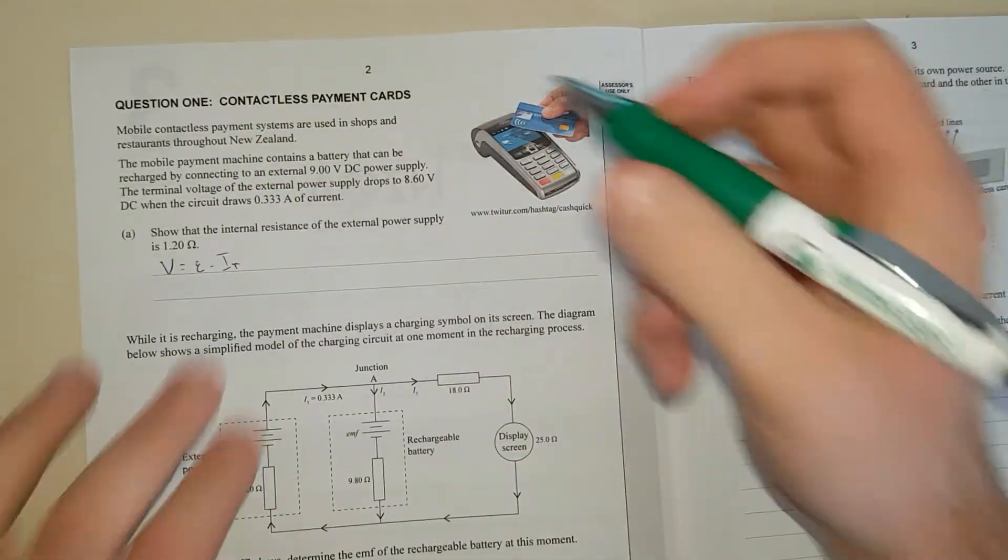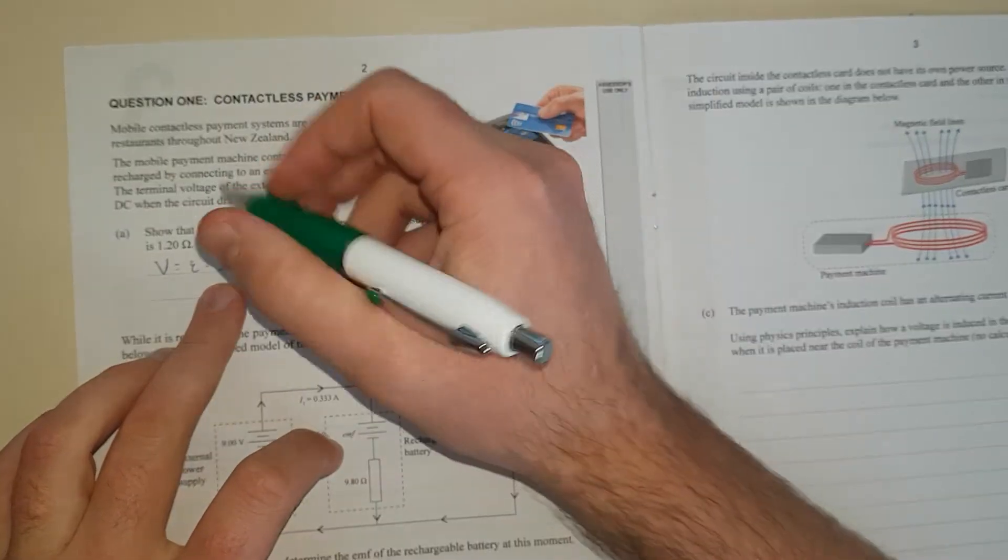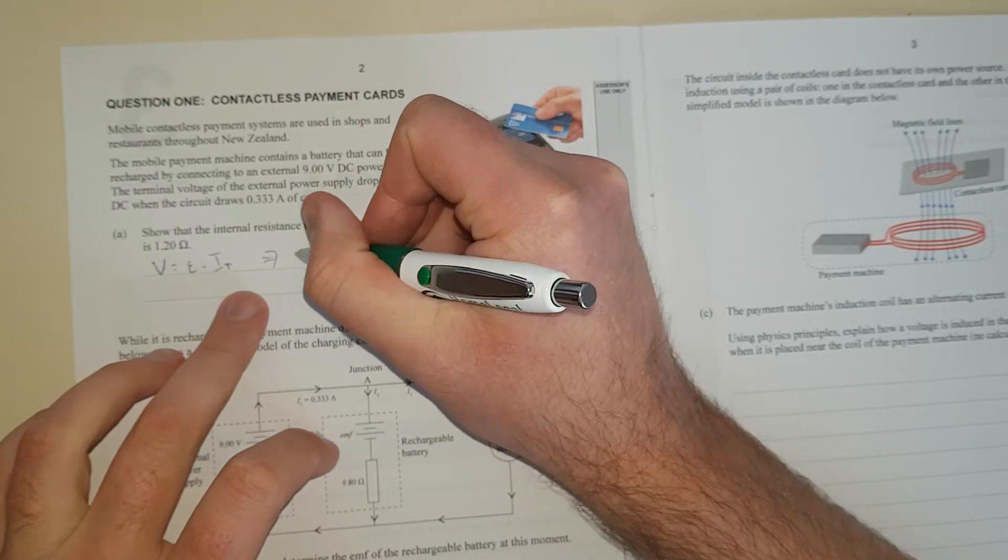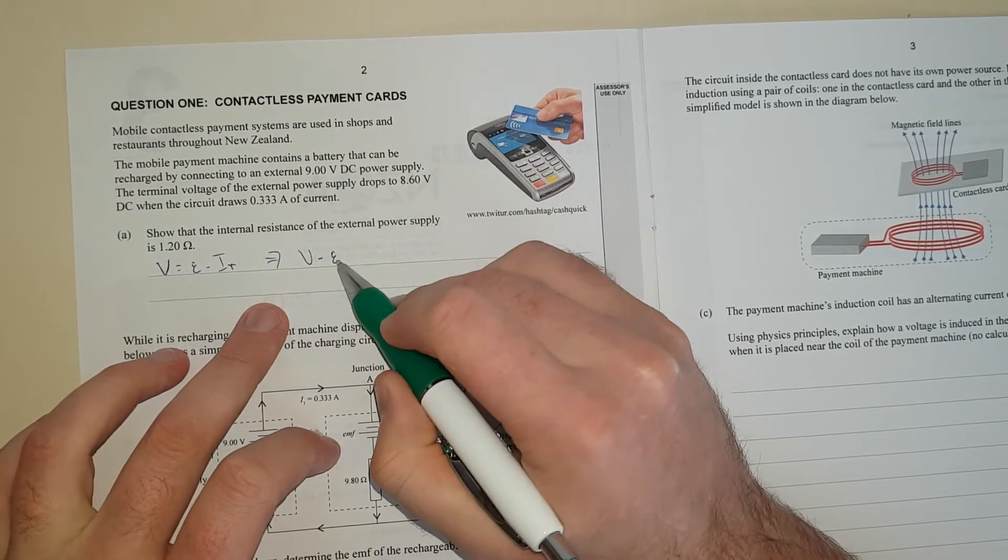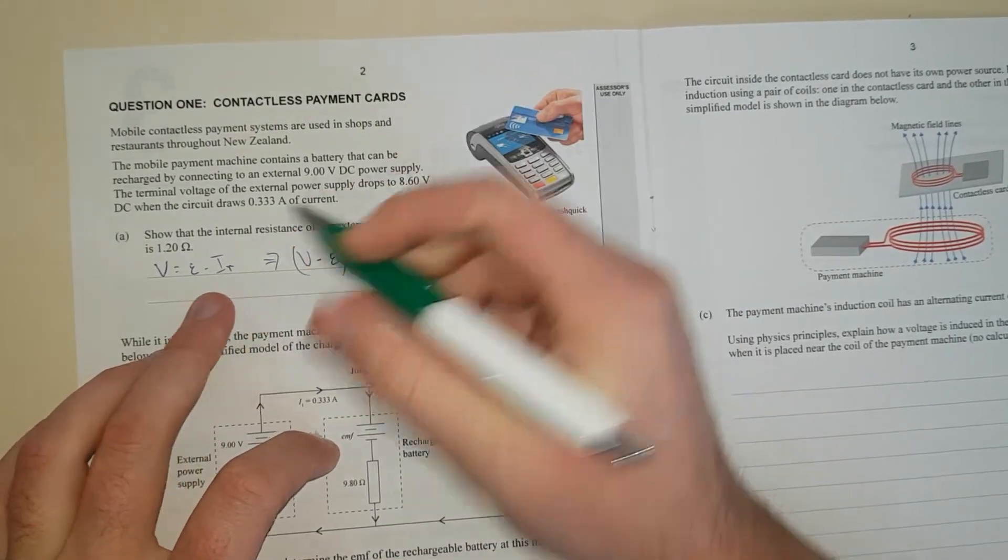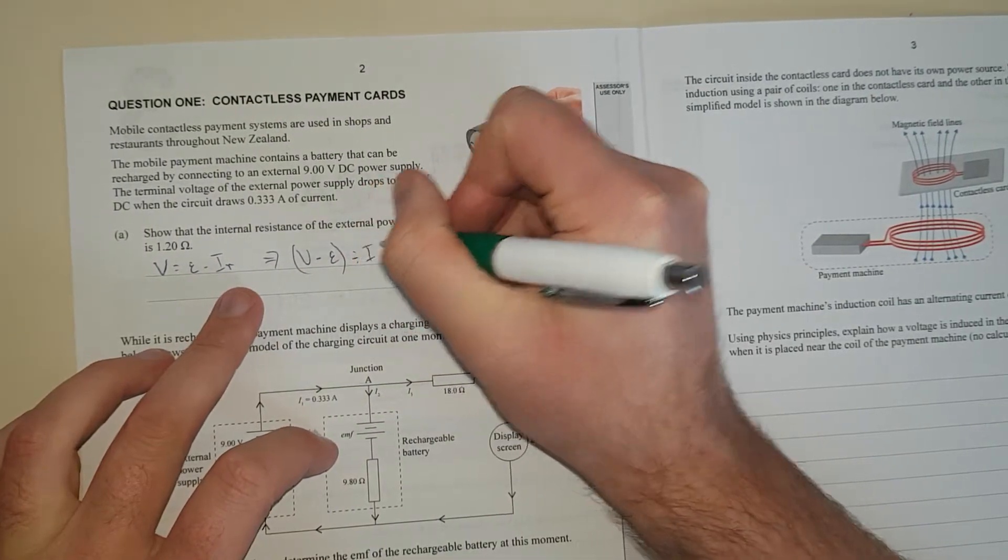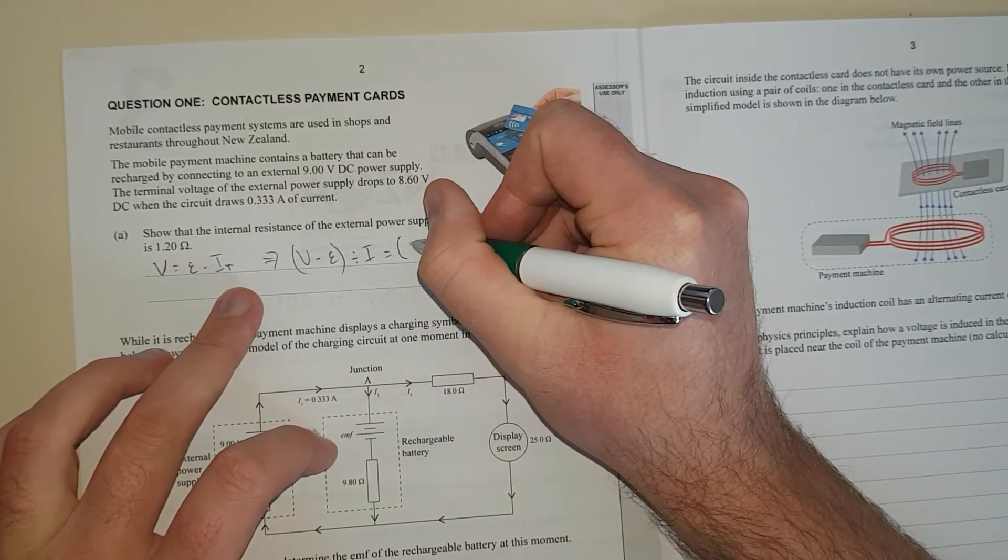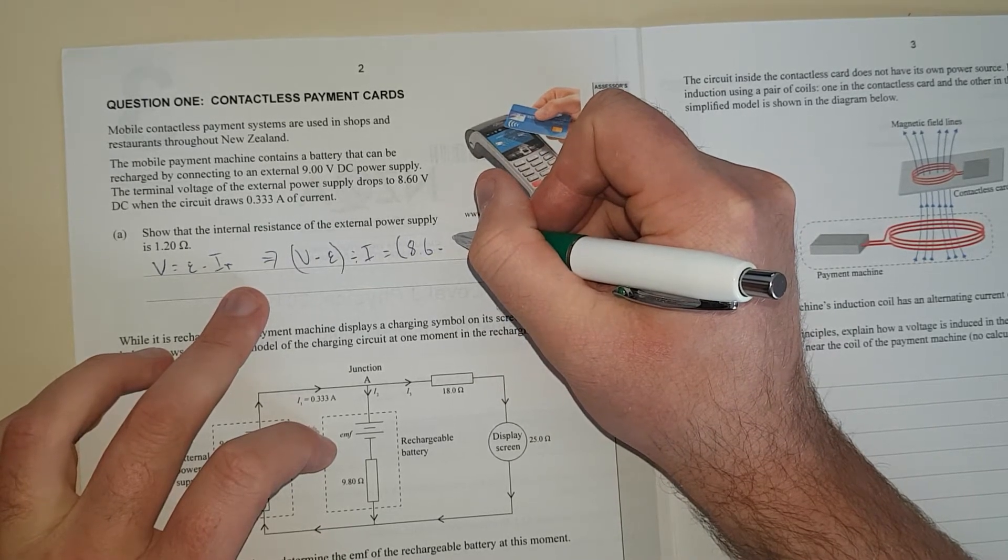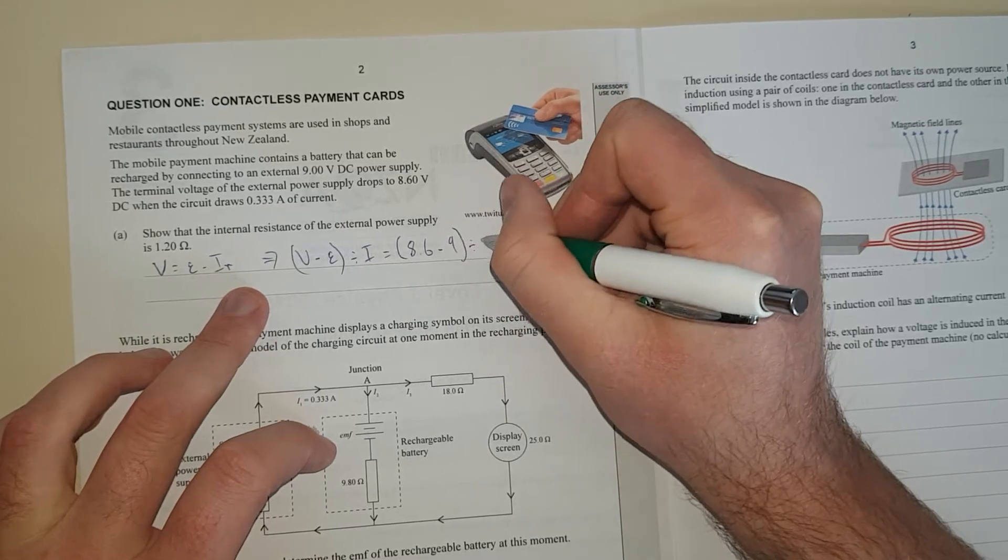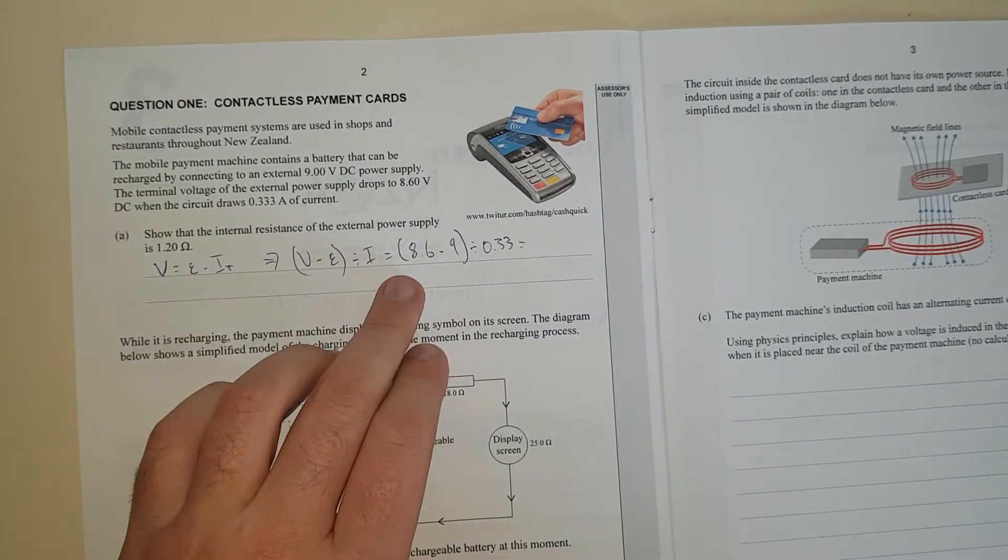We can rearrange for the little r, because that's the resistance. That's what we're trying to find. So we're going to chuck that over there, voltage minus the EMF, which is the sticker voltage. So this is the voltage that comes out, which is 8.6. We're going to divide that by current. That equals 8.6 minus 9. And this will give us minus R, because the minus sign is still there.